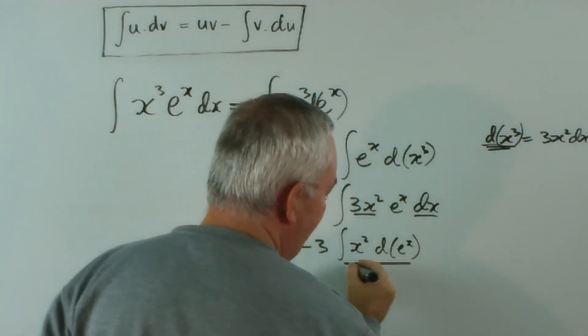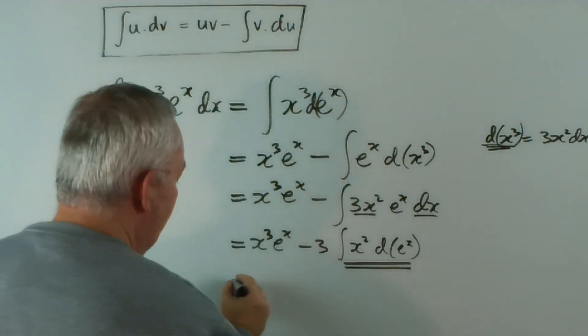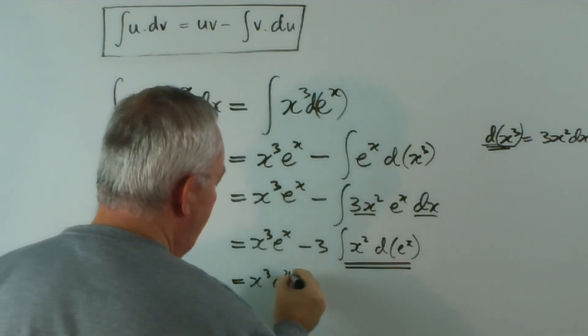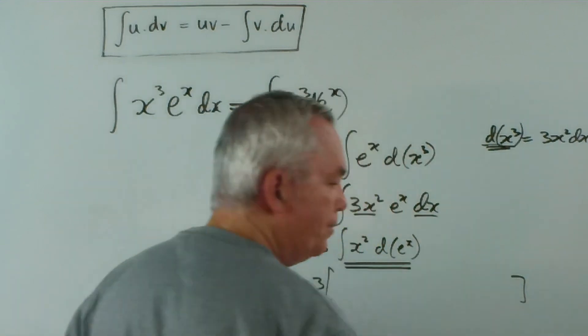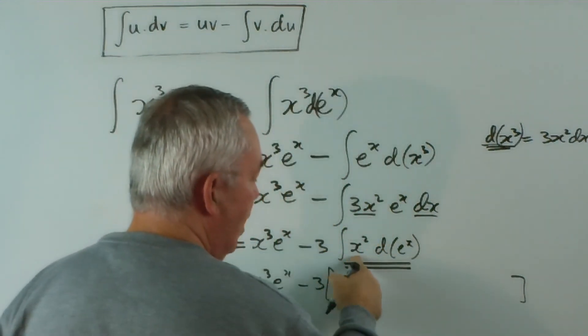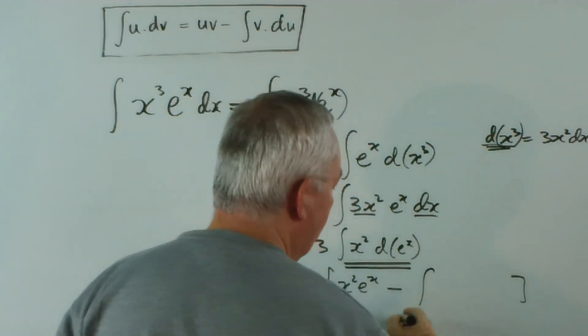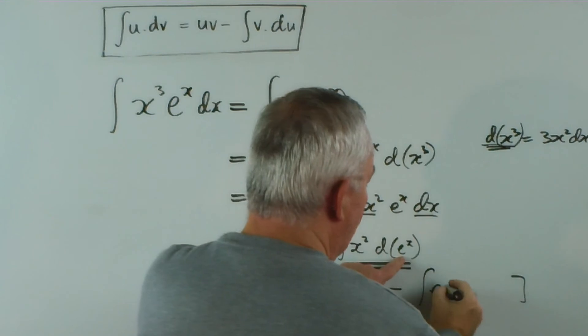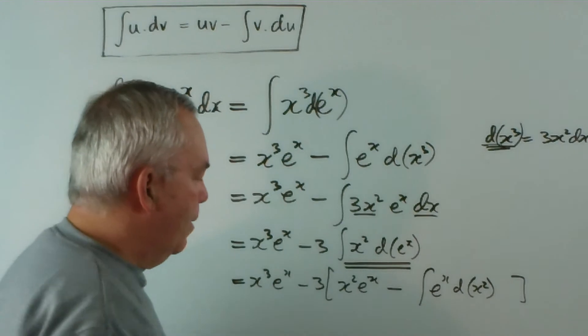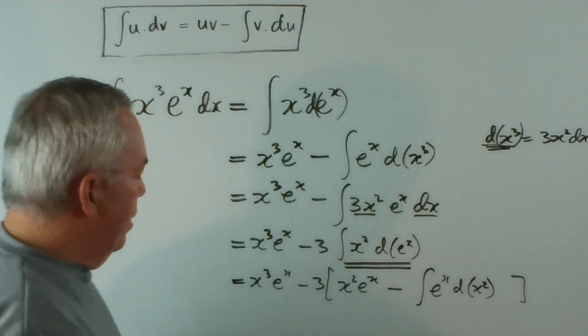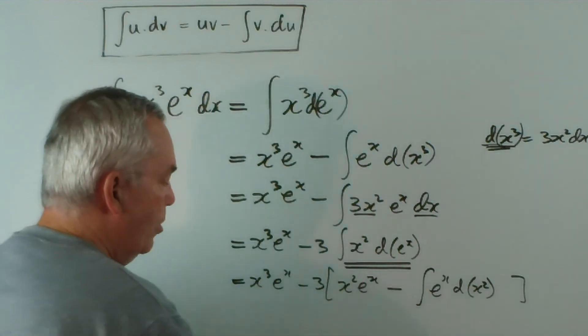I use integration by parts on that as well. So, this will be x^3 e^x minus 3. Lots of integration by parts. It will be that times that minus the integral of e^x d(x^2). Multiplying both these things inside by negative 3, we could separate the terms. We've now got two lovely terms out here.